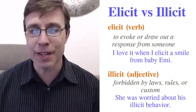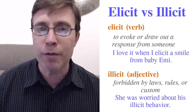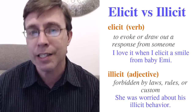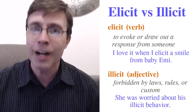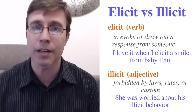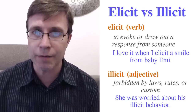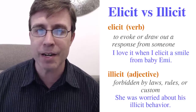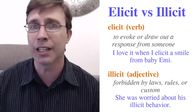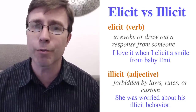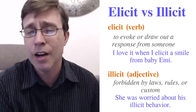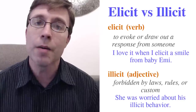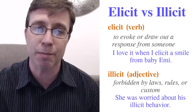'Elicit' is a verb — you're provoking a response of some kind from another person. For example, 'I love it when I elicit a smile from baby Emmy.' I'm smiling at her and I get her to smile back — I elicit a response. 'Illicit,' the adjective, is talking about something that is illegal or forbidden. You often find it before nouns like 'illicit behavior' or 'illicit activities.' For example, 'she was worried about his illicit behavior.' They sound the same but have very different meanings and different spellings.